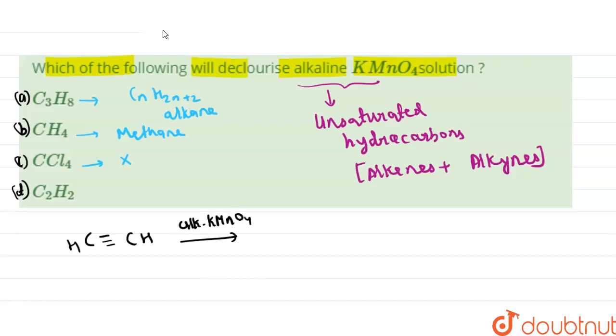KMnO4, it will produce oxalic acid, and our KMnO4 will be reduced to MnO2. So it will decolorize.